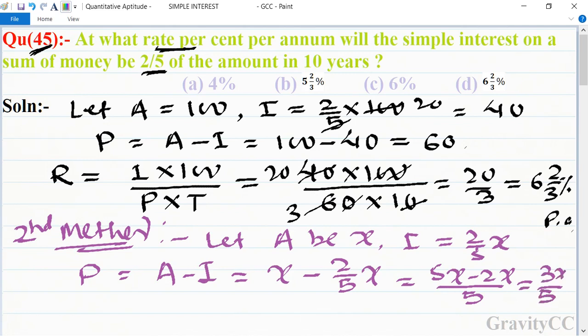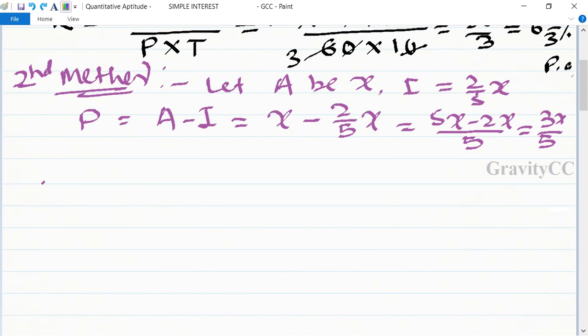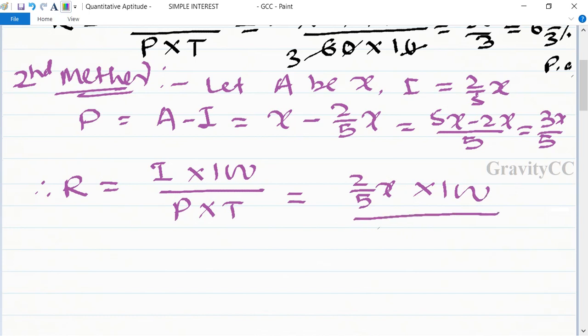Therefore rate of interest is equal to I times 100 upon P times T, so is equal to 2/5x times 100 upon principal 3x/5 into time 10 years. Zero zero cancel and 5, 5 cancel and 5, 5 cancel and x, x cancel.